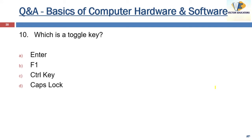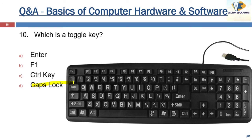Next question: which is a toggle key? The answer is Caps Lock. Toggle means either of two positions — it does not need to be pressed continuously. When the Caps Lock key is on, the indicator light on the keyboard lights up. The numeric keypad also has a Number Lock key, which is another toggle key — it can be used to enter numbers when Number Lock is on, or to move the cursor when Number Lock is off.